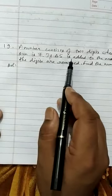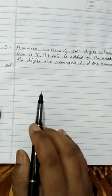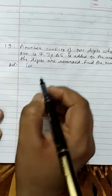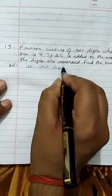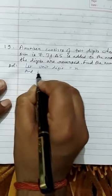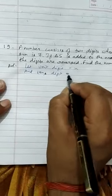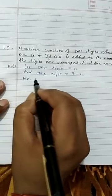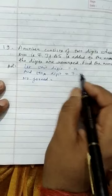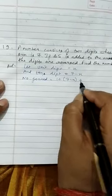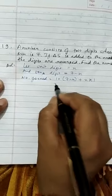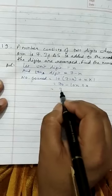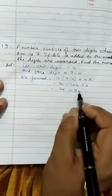Next is Q19: a number consists of 2 digits whose sum is 7. If 45 is added to the number, the digits are reversed. Find the number. Let the units digit be x and the tens digit be 7 minus x. Positive x and negative x cancel to give 7. The original number is formed by multiplying the tens digit by 10 and units digit by 1: 10(7 minus x) plus x equals 70 minus 9x.